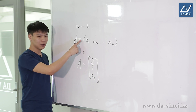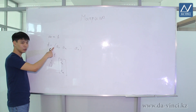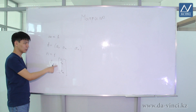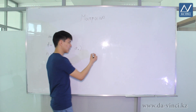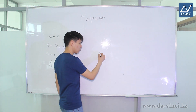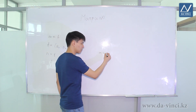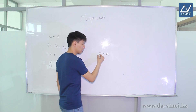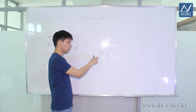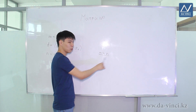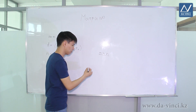Pay attention — here we use parentheses and here square brackets, but generally speaking the designation doesn't matter; you can use any of them. If the number of rows and the number of columns in the matrix are the same, then we can say that this is a square matrix.